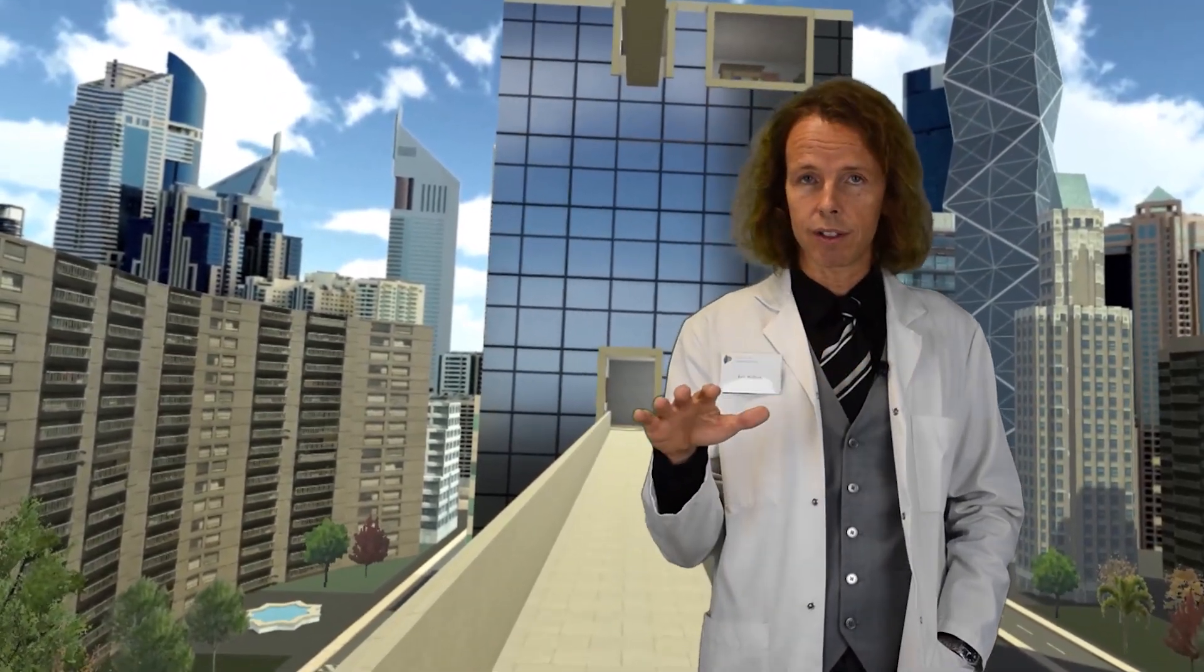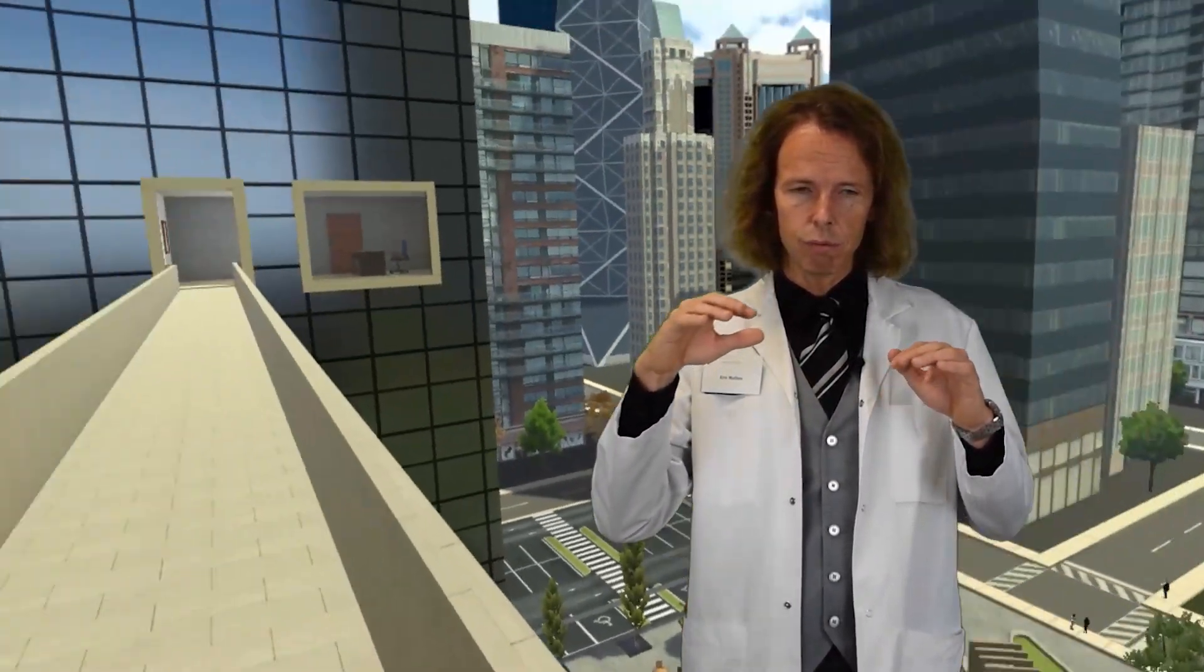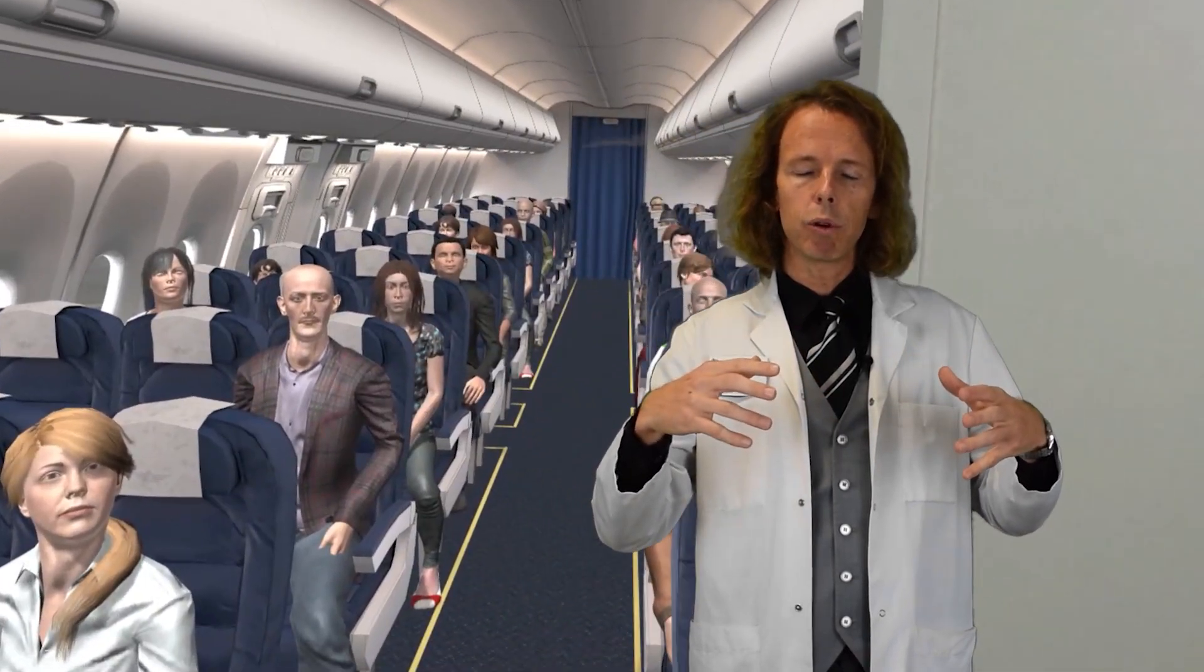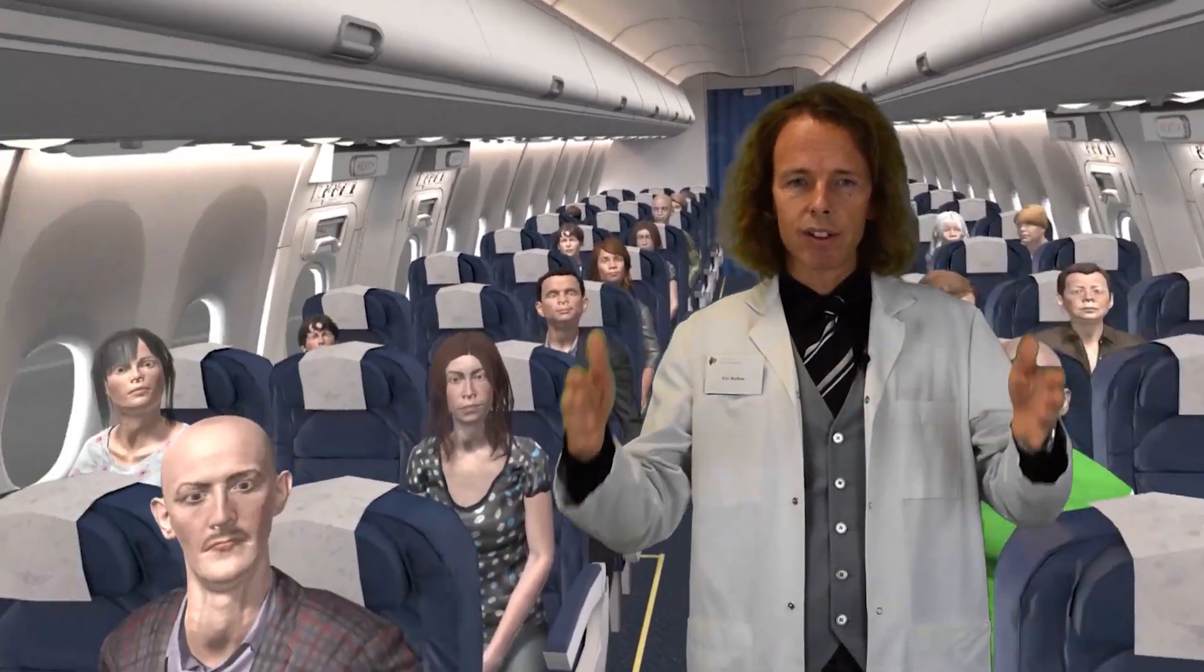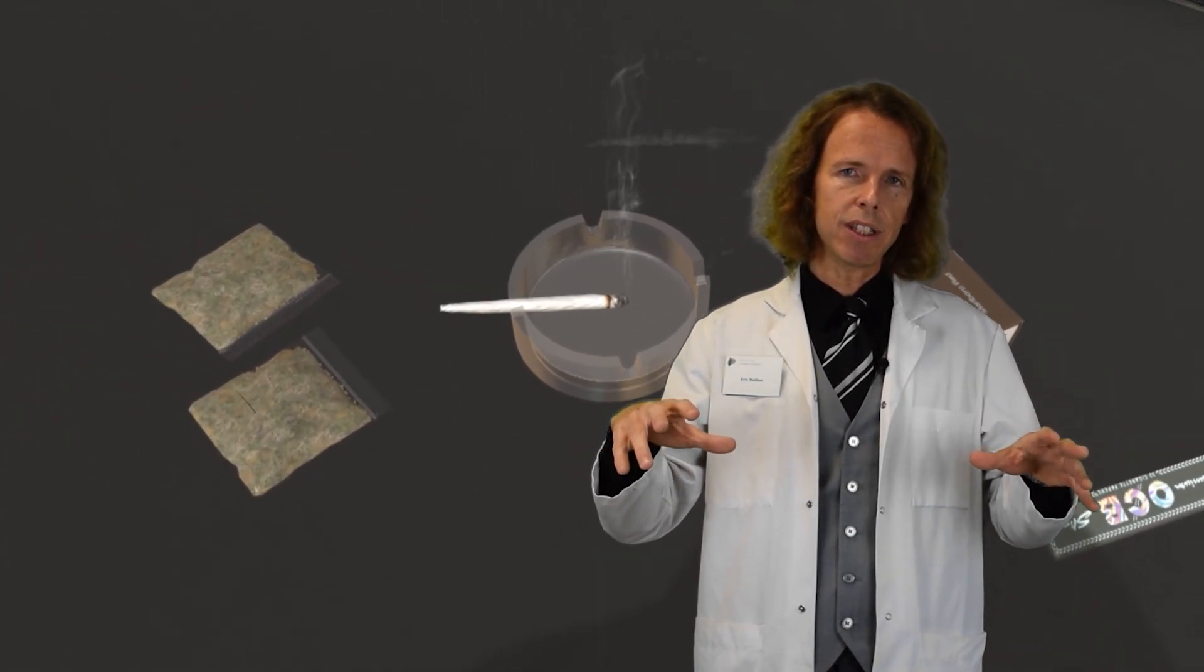The advantages of using virtual reality in exposure therapy are numerous. The first one is the control given to the therapist, because the therapist can construct a hierarchy in the treatment itself. Which means that by just clicking on an icon, the therapist can choose how many people will be present in a virtual plane, the transparency in a lift, how much blood could be on a wall for obsessive disorder, how many rats could be in a cave, how many packets of cigarettes can be present on a table for addiction. All these parameters can be controlled by the therapist, which means that you can really construct a very progressive and somehow soft therapy for the patient.